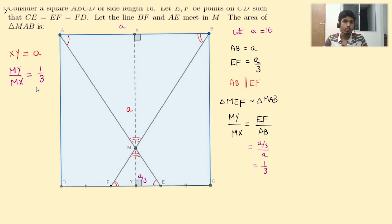Add one to both sides. You get MY plus MX upon MX equals 4 by 3. That implies MX is equal to 3 fourth of MY plus MX, which is XY. XY is A, so we get 3A by 4. Thus, the length MX is 3A by 4, and we are done.